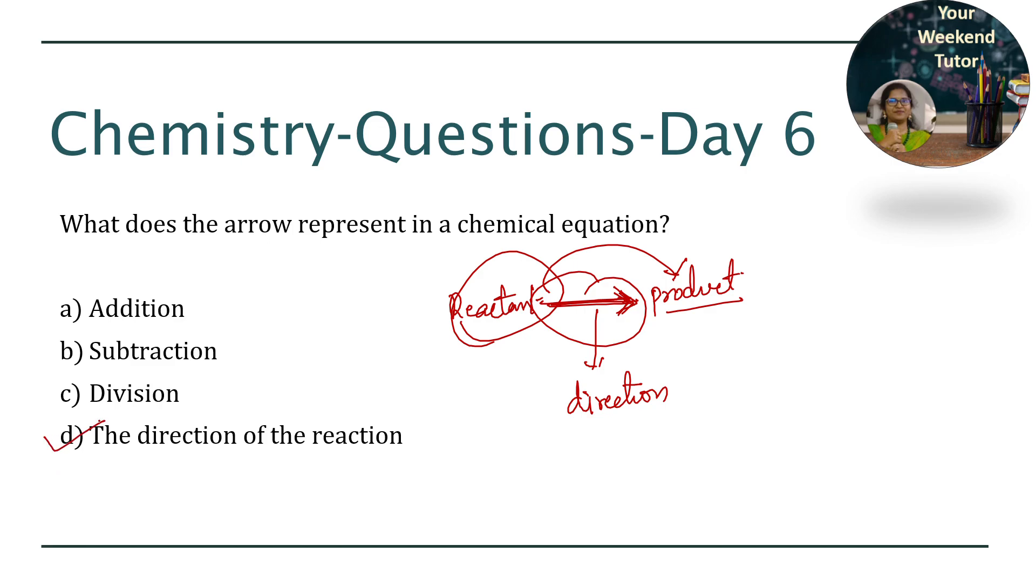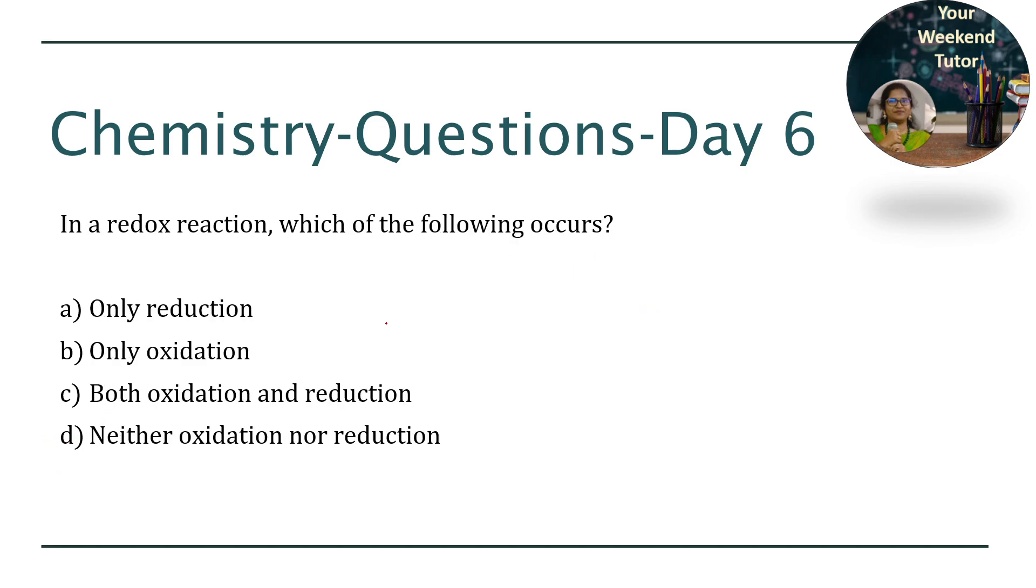So what is the correct answer? Direction. Next, in a redox reaction which of the following occurs? As I already discussed, a redox reaction is something where both reduction and oxidation takes place.